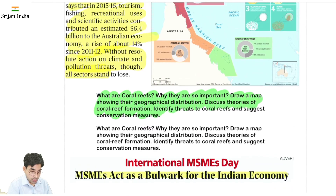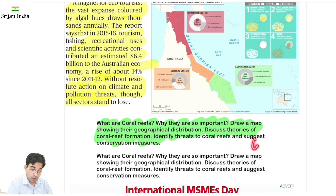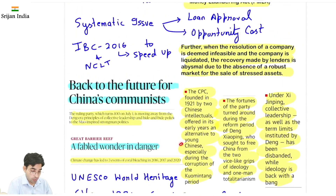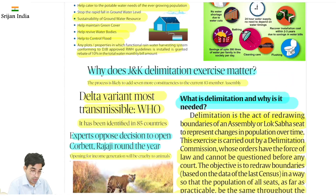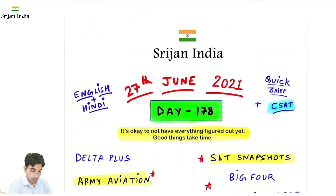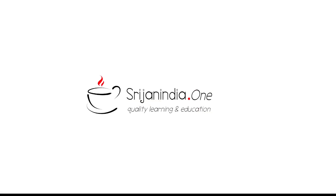International MSME Day aur coral reefs — aaj bahut acche se prepare karna hai. NCERT bhi dekho, GC Leong mein bhi dekh lena theories wagera. Ye topics important hain: Chinese Communist Party, Great Barrier Reef, Reining in Big Four, Science & Technology, Rainwater Harvesting, Polio drops, 27th of June. Thank you so much for watching this video — take care, study well, and be safe. We'll see you next time.